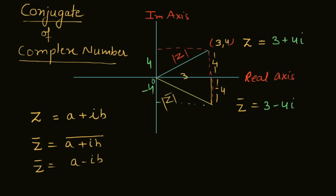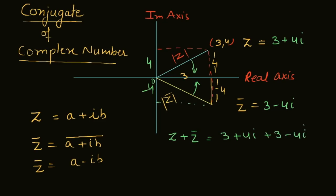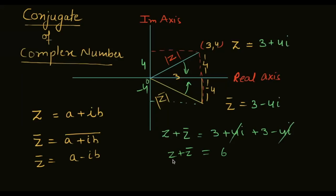On the real axis, if z is a real number then z-bar equals z. When we add z and z-bar, the imaginary parts cancel out and only the real part remains. So z plus z-bar gives us 2 times of real part of z, that is 2 times of a, which is twice of real z.